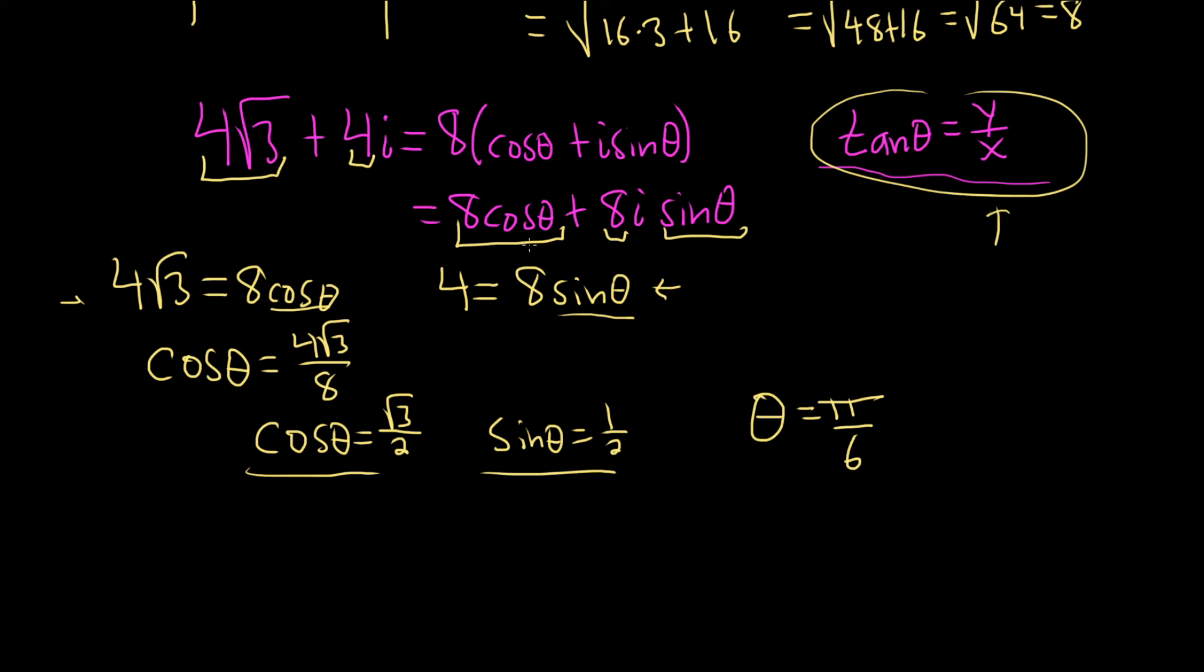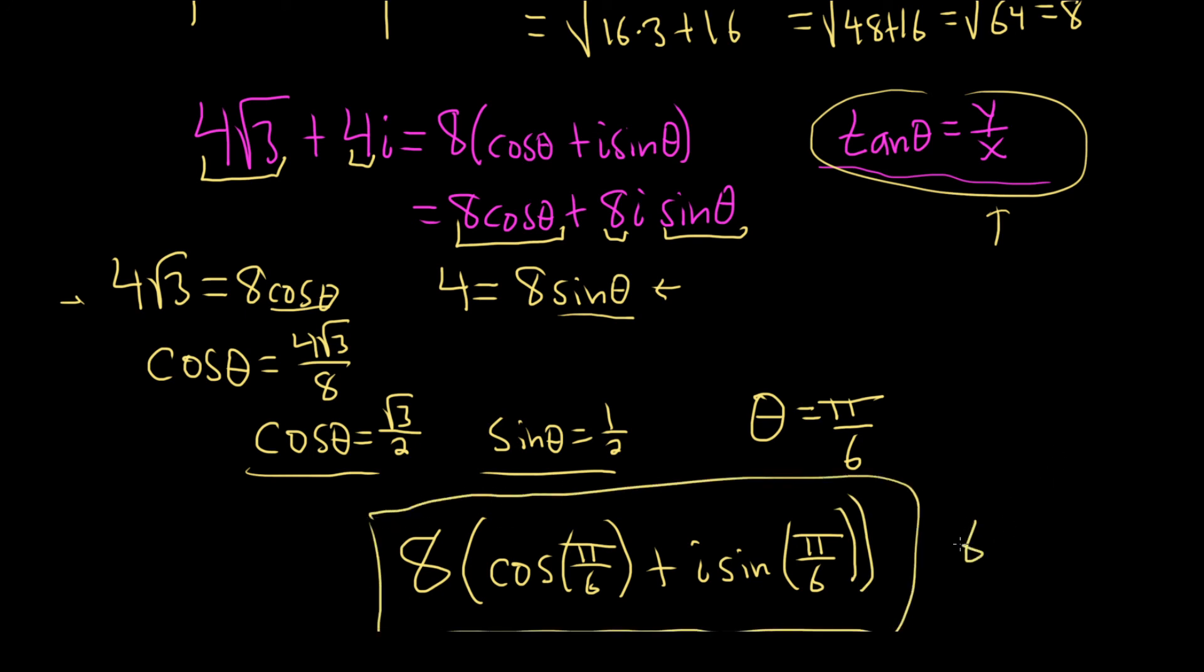So now all we do is we plug it back into the formula. So the trig form would be 8 parentheses cosine of pi over 6 plus i sine of pi over 6. And this would be what's called the trig form of the complex number. Another way to write it is 8 cis pi over 6. Cis stands for cosine i sine. I hope this video has been helpful.